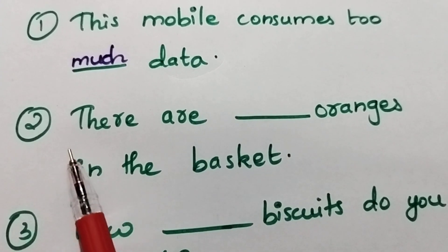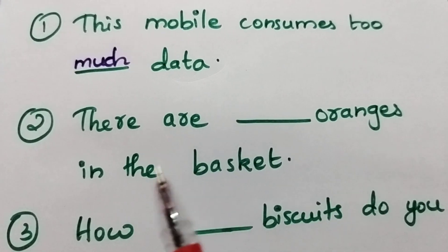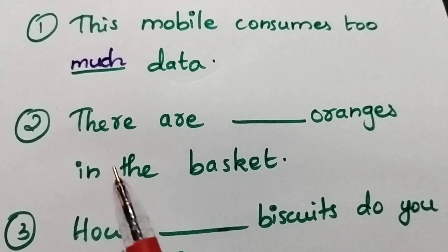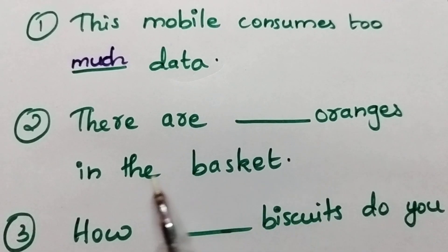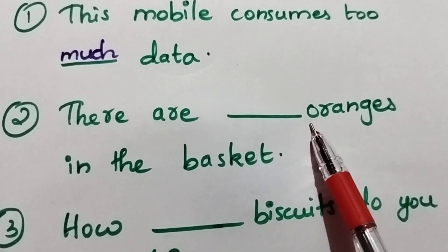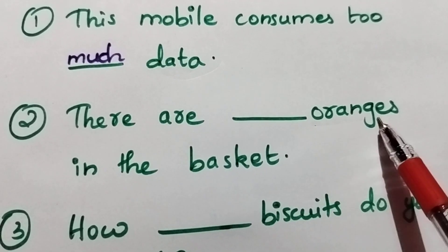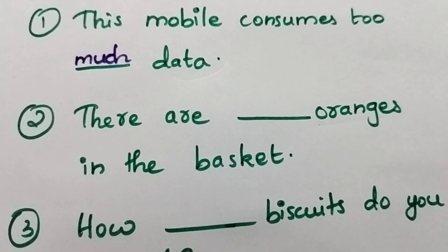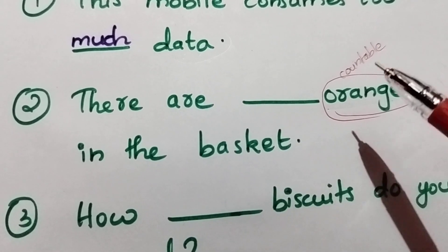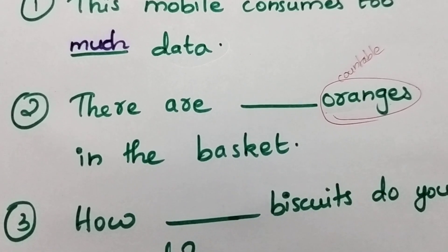Second: 'There are ___ oranges in the basket.' Check the noun — 'oranges' is a countable noun; we can count oranges. So you use 'many': 'There are many oranges in the basket.'